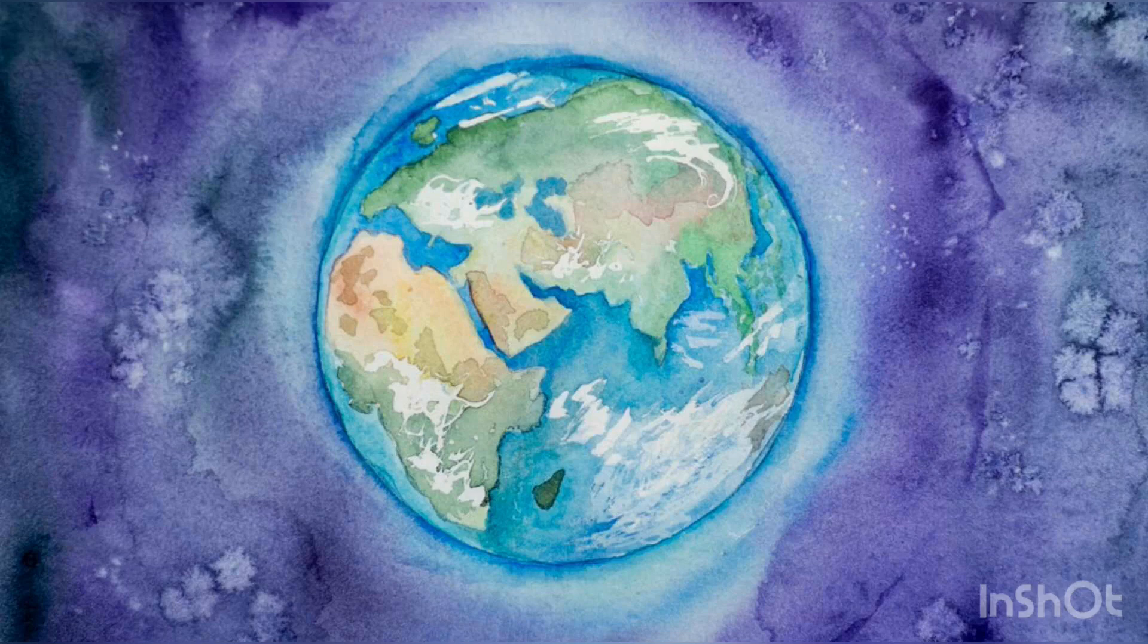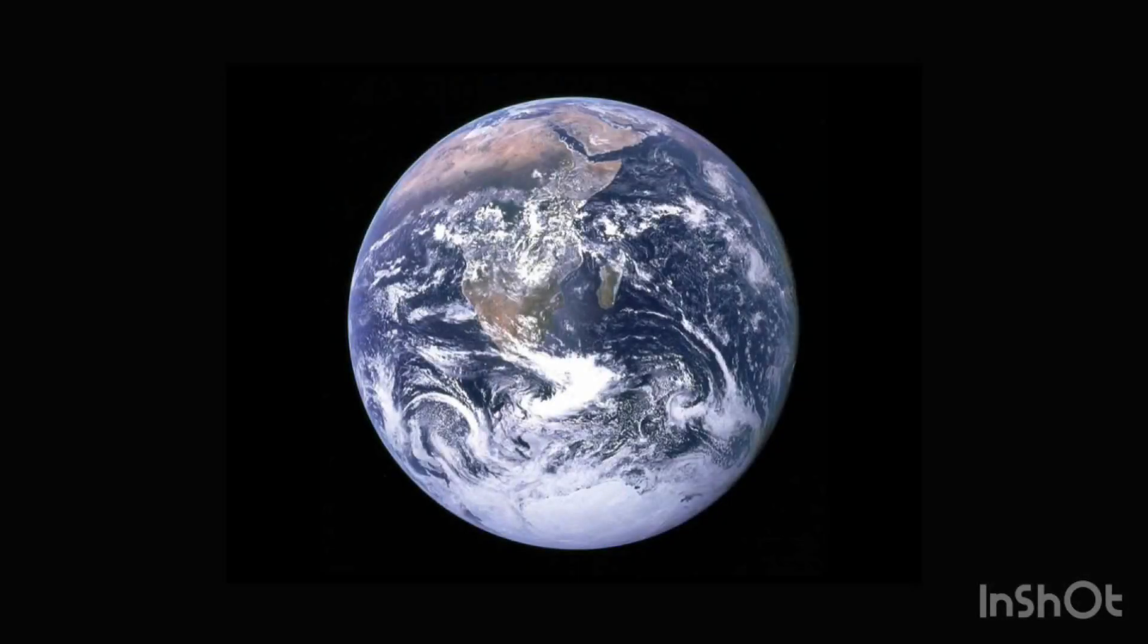Earth's atmosphere consists mostly of nitrogen and oxygen. More solar energy is received by tropical regions than polar regions and is redistributed by atmospheric and ocean circulation. Water vapor is widely present in the atmosphere and forms clouds that cover most of the planet.